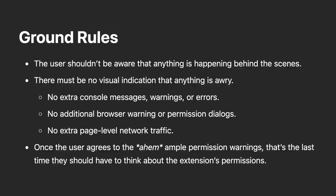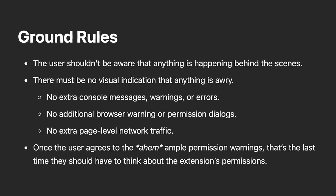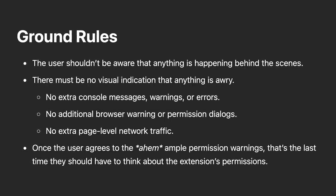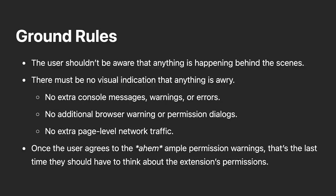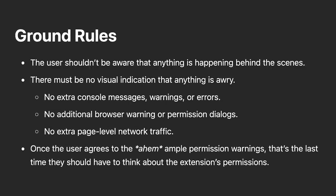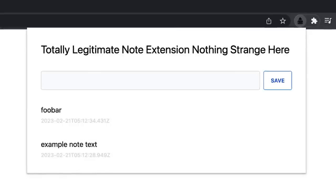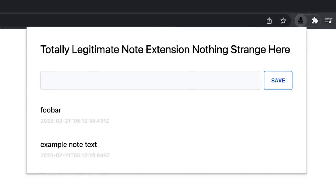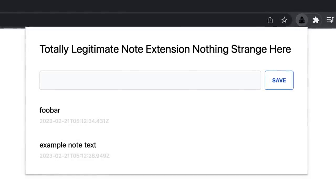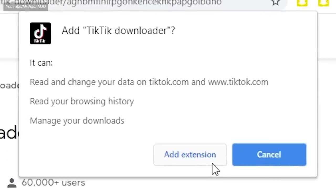Matt's ground rules were that he had to make his extension look legitimate enough to hypothetically fool someone into installing it. He wanted to fly under the radar, so nothing that would make users suspicious. There could be no extra console warnings, no visual indicators that anything was amiss, and the extension itself had to be disguised as something benign. The facade he created was a note-taking app — a simple extension that lots of people would install without looking twice. Once he had the disguise sorted, he had to think about how to handle permissions.